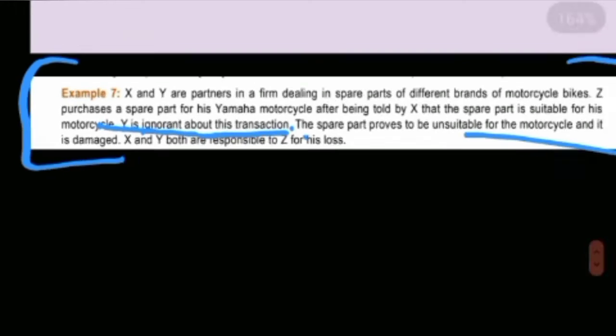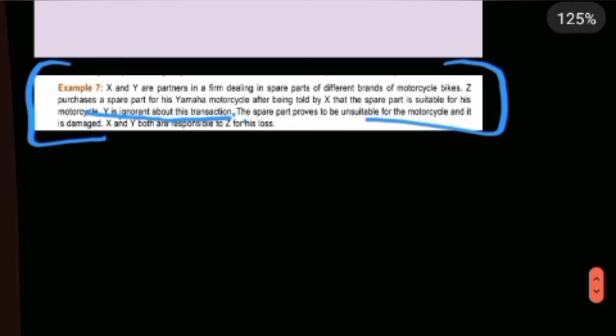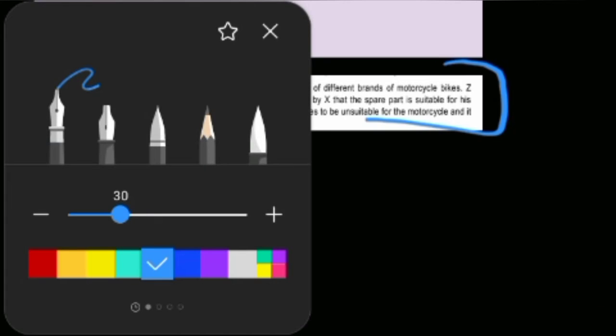The spare part proves to be unsuitable for the motorcycle and it is damaged. X and Y both are responsible. X sold the spare part to Z, and even though Y was not aware of this transaction, both must bear responsibility for the damaged part.